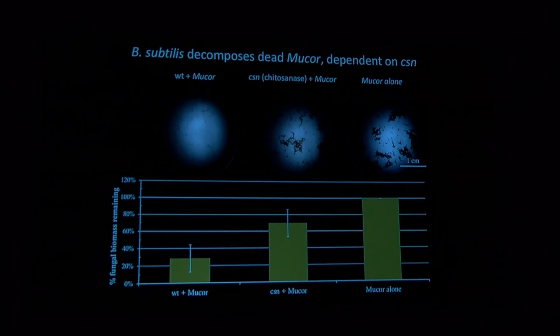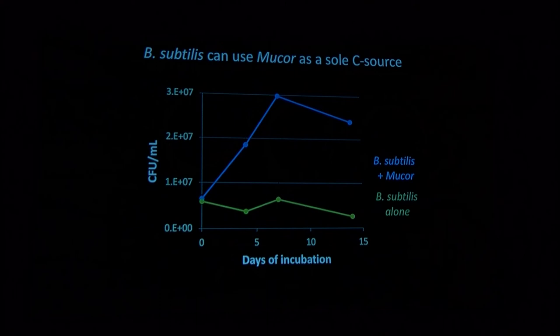So we did find that, indeed, Bacillus subtilis can decompose dead mucor fragilis. So if you just have mucor alone, it looks like this. You see these aggregates, and you have a ton of fungal biomass. If you add wild-type Bacillus subtilis, it's decomposed very nicely. And if you knock out the chitocinase gene, we end up with some decomposition, but definitely not full decomposition. So it really does need this chitocinase enzyme, which is excreted extracellularly, to decompose. And Bacillus subtilis can use mucor as a sole carbon source. You just put it in minimal salts with a dead mucor hyphae, and it will grow very nicely. And I should say, it can also use mucor as a sole carbon and nitrogen source.